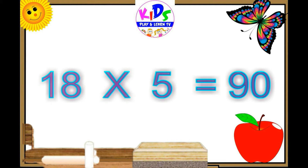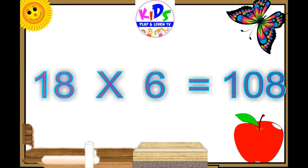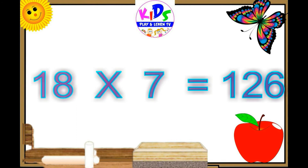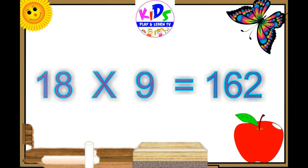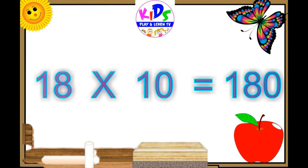18 sixes are 108, 18 sixes are 108. 18 sevens are 126, 18 sevens are 126. 18 eights are 144, 18 eights are 144. 18 nines are 162, 18 nines are 162. 18 tens are 180, 18 tens are 180.